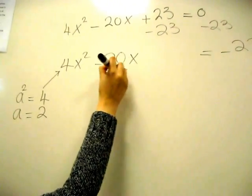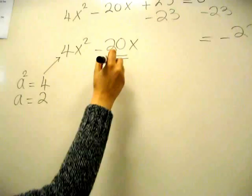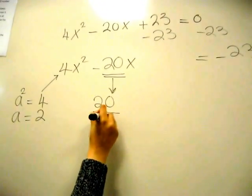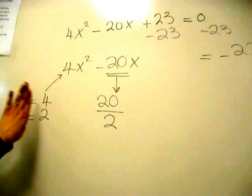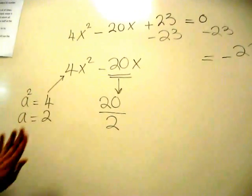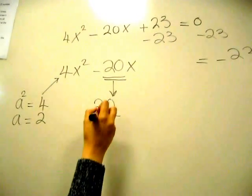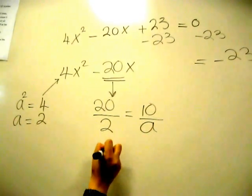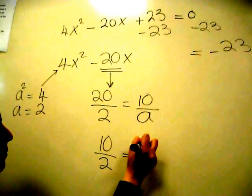You take the coefficient of x, the middle coefficient. First of all, you divide it by 2, not a. So let's say a was something else, that's not part of my step right now. So you divide it by 2, you get 10. Then you divide it by a. In this case, a is 2, and you would get 5.